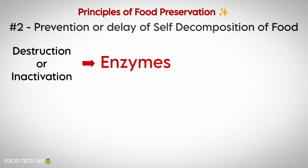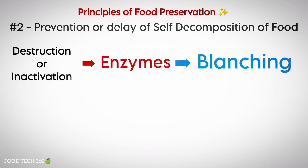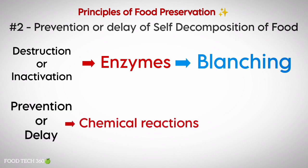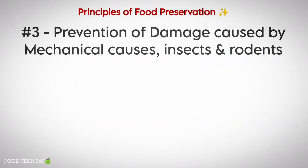Prevention or delay of self decomposition can be done by destruction or inactivation of enzymes through the process called blanching. Also, by prevention or delay of chemical reactions through the addition of antioxidants.